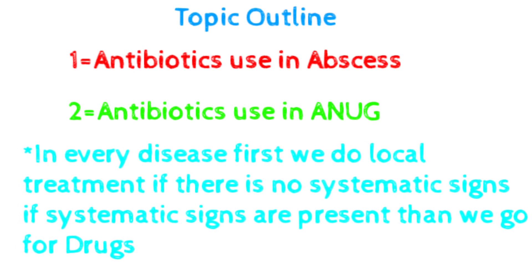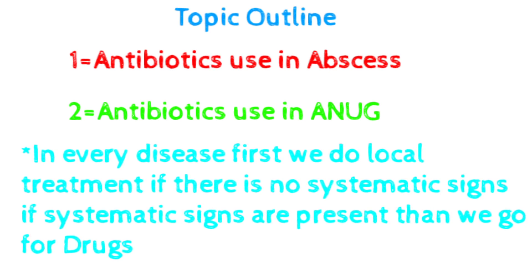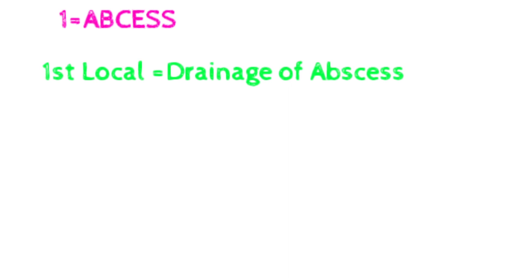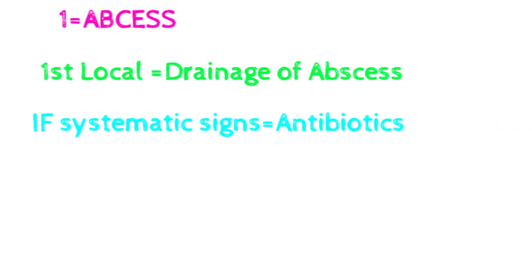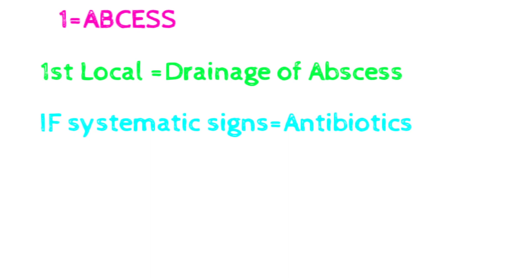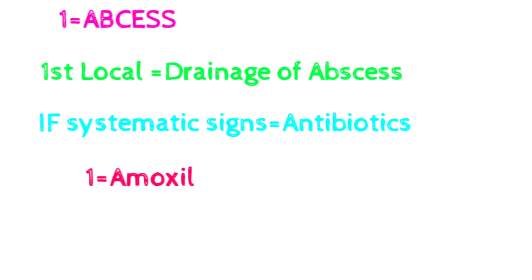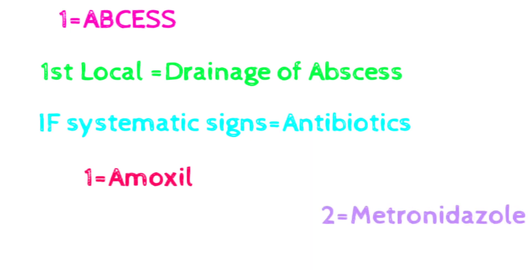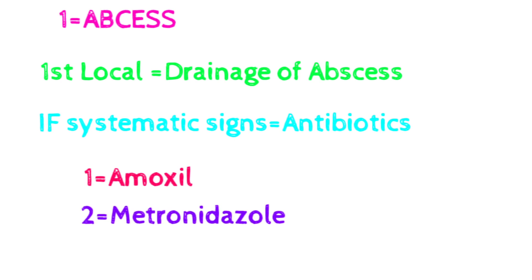In every disease, we first do local treatment if there are no systemic signs. If systemic signs are present, then we go for drugs — systemic signs like fever. Starting with abscess: first we go for local treatment, which is drainage of the abscess by two methods — one is to extract the tooth, or if extraction is not possible, we drain the space where the infection is present. If systemic signs are present, then we go for antibiotics; if there are no systemic signs like fever, we only drain the abscess.